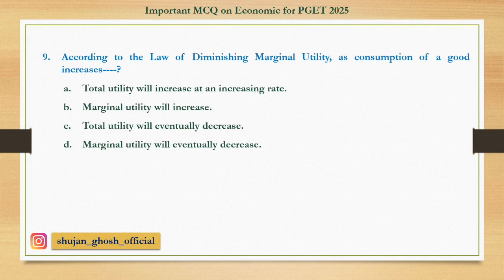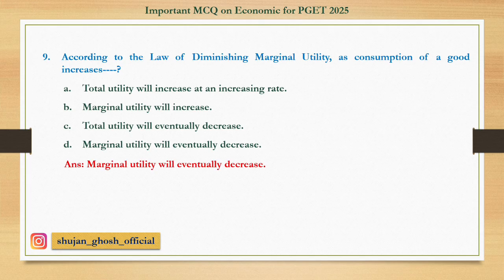Question number nine: According to the law of diminishing marginal utility, as consumption of a good increases — option A: total utility will increase at an increasing rate; B: marginal utility will increase; C: total utility will eventually decrease; D: marginal utility will eventually decrease. Answer: marginal utility will eventually decrease.